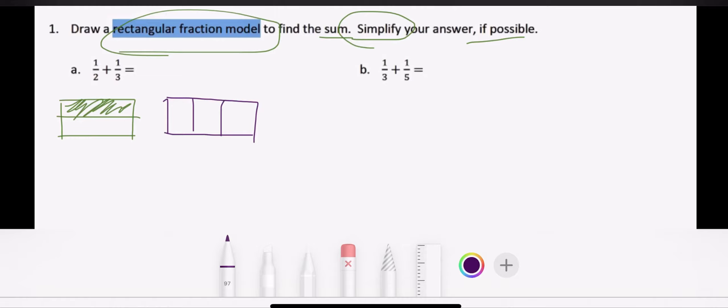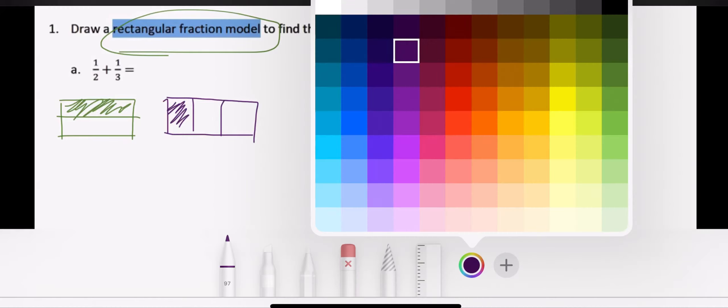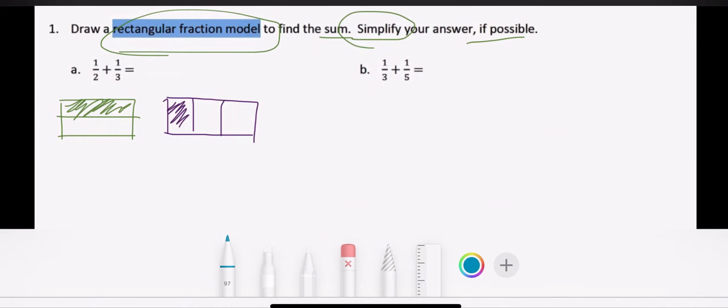So I'm looking at my third model and I know that I have one out of three. So now in my head I'm thinking, okay, my denominators or my two numbers on the bottom are both different. So what I have to do is I'm actually going to split my half into thirds and then I'm going to split my thirds into half.